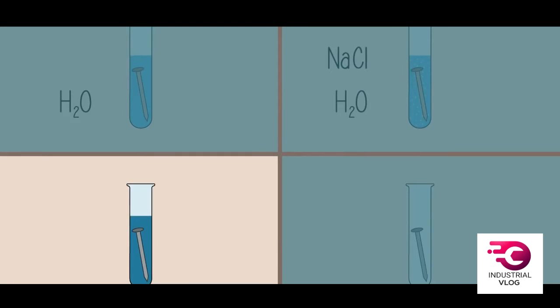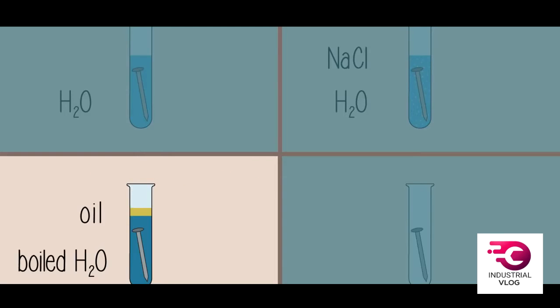Fill the third test tube with recently boiled water and add a thin layer of oil. When we boil the water, we remove any dissolved oxygen, and the layer of oil prevents any oxygen from further dissolving. In the last test tube, add a spoonful of calcium chloride. Calcium chloride removes moisture or water.